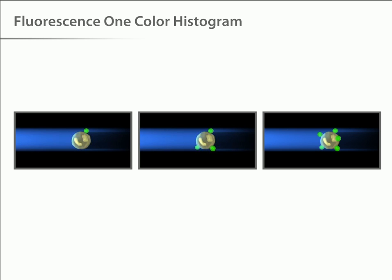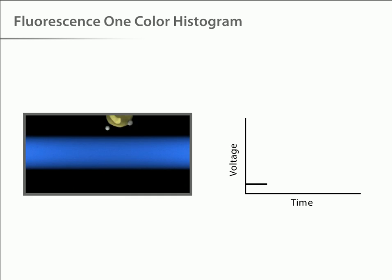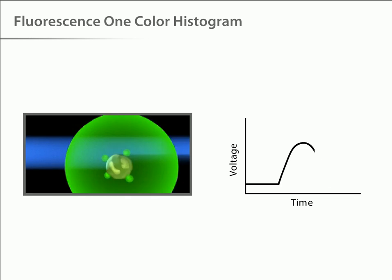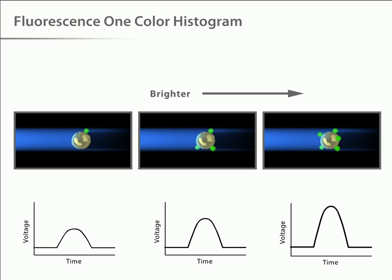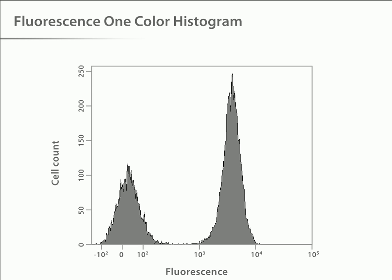Fluorescence data is collected in generally the same way as forward and side scatter data. In a population of labeled cells, some will be brighter than others. As each cell crosses the path of the laser, a fluorescent signal is generated. The fluorescent light is then directed to the appropriate detector, where it is translated into a voltage pulse proportional to the amount of fluorescence emitted. All of the voltage pulses are recorded and can be presented graphically.